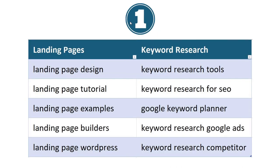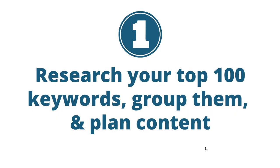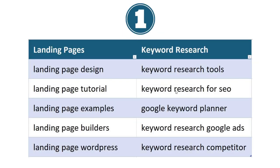A quick example for number one: if we're looking at landing pages, the top five keywords are landing page design, tutorial, examples, builders, and WordPress. For keyword research, it's tools for SEO, Google Keyword Planner, keyword research for Google Ads, and competitor keyword research. What you want to do is start by pulling in some of these top keywords for your business, and then start creating content around all these different keywords.